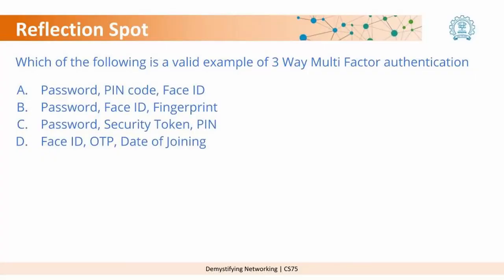Now it is time to come to a reflection spot. You can pause the video for some time and try to answer the question. The question is: which of the following is a valid example for three-way multi-factor authentication? Option A: password, a pin code, a face ID. Option B: password, face ID or a fingerprint. Option C: password, secure token, pin. Option D: face ID, OTP, and date of joining.